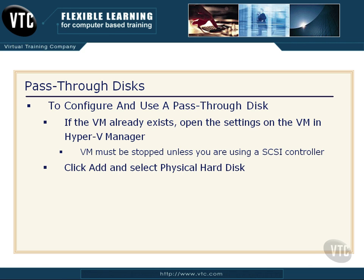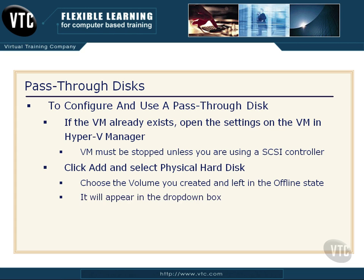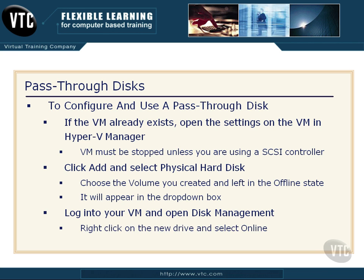I want to click Add and select Physical Hard Disk, then choose the volume that I created and left in the offline state — it'll appear in the drop-down box. Once I've chosen that, I can start up my virtual machine, log into it, open Disk Management inside the virtual machine, right-click on that new drive, select Online, and I then have a pass-through disk.